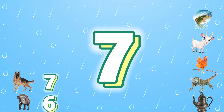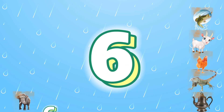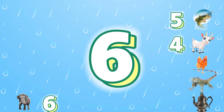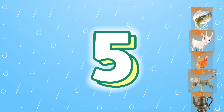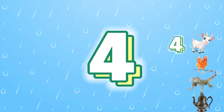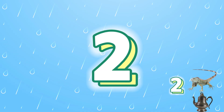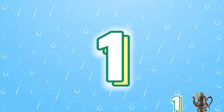Countdown from 7: 7, 6, 5, 4, 3, 2, 1. Countdown from 6: 6, 5, 4, 3, 2, 1. Countdown from 5: 5, 4, 3, 2, 1. Countdown from 4: 4, 3, 2, 1. Countdown from 3: 3, 2, 1. 2, 1. 1.